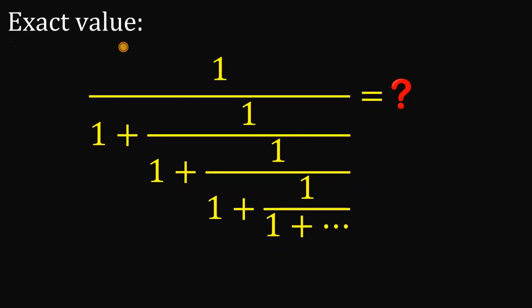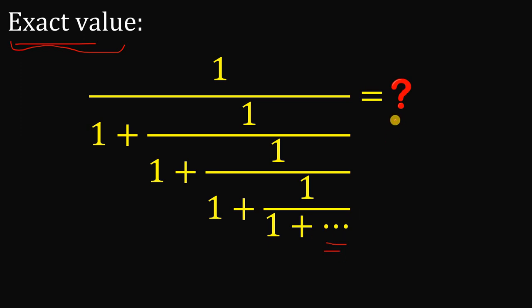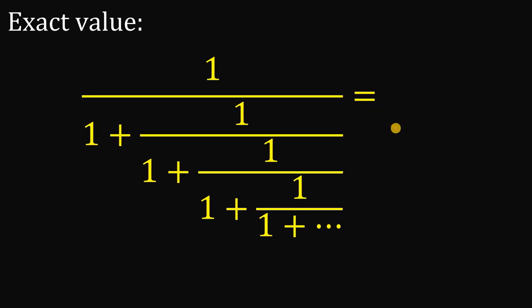Our goal is to find the exact value of this expression: 1 over 1 plus 1 over 1 plus 1 over 1 plus 1 over 1 plus, until infinity. To answer this question, let's name this expression as a variable — let's call this n.